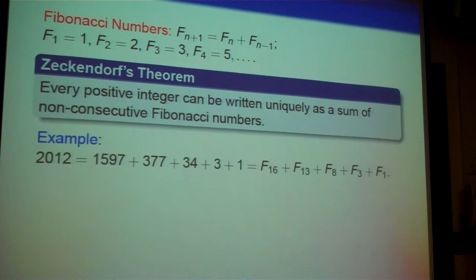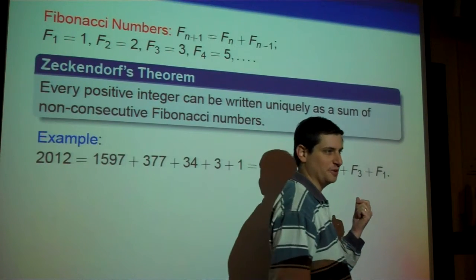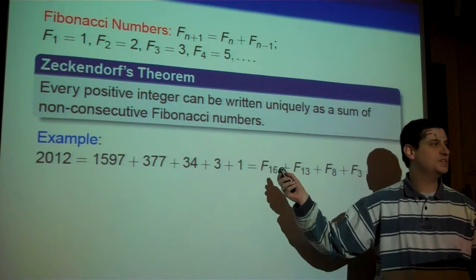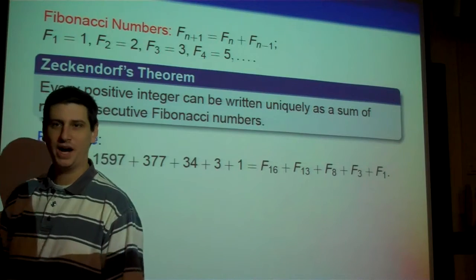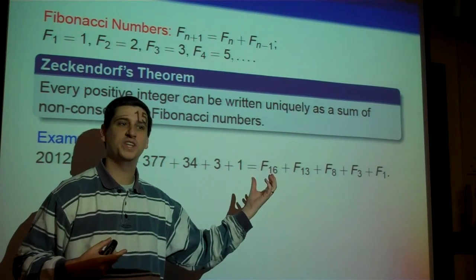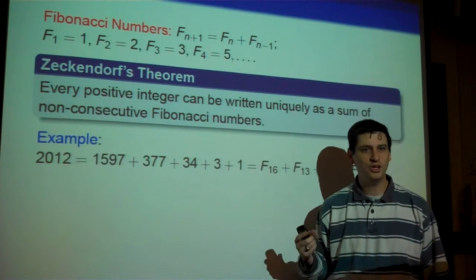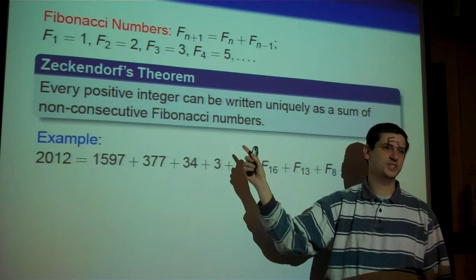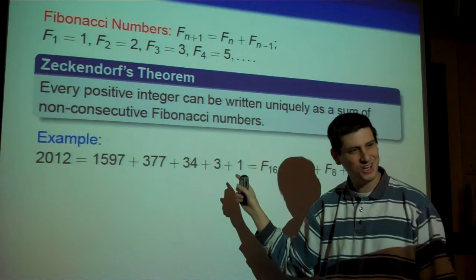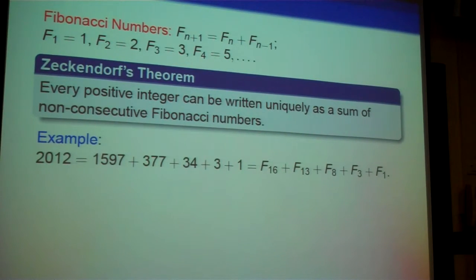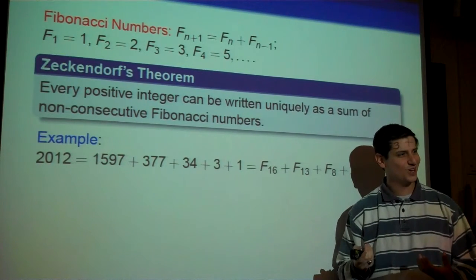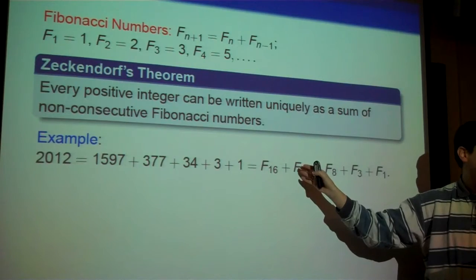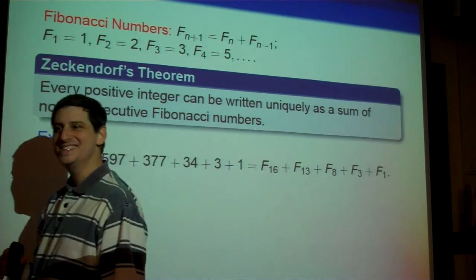One nice application of Zeckendorf's theorem is converting kilometers to miles. I learned this from Karl Pomerantz. There are 1.6 kilometers in a mile, and the golden mean is about 1.6. So if you write a number in Zeckendorf decomposition and multiply every Fibonacci number by the golden mean, you've moved to the next Fibonacci number. To convert miles to kilometers: take your Zeckendorf decomposition and increase all indices by one. To convert kilometers to miles: decrease all indices by one. The further you're driving, the more accurate this trick is.